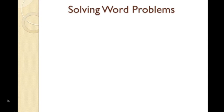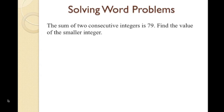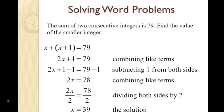Let's solve a word problem step by step. We will be solving for the unknown values. The problem reads: the sum of two consecutive integers is 79. Find the value of the smaller integer. We can represent two consecutive numbers being added together as x plus x plus 1. We can write the equation as x plus x plus 1 equals 79. Combine like terms to get 2x plus 1 equals 79. Subtract 1 from both sides of the equation and combine like terms to get 2x equals 78.